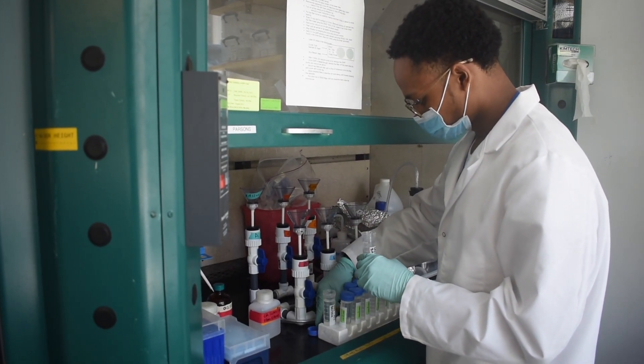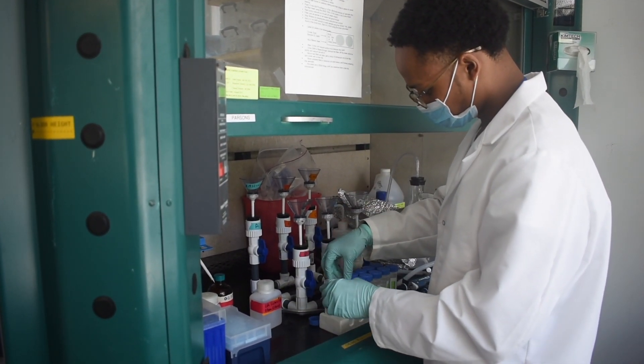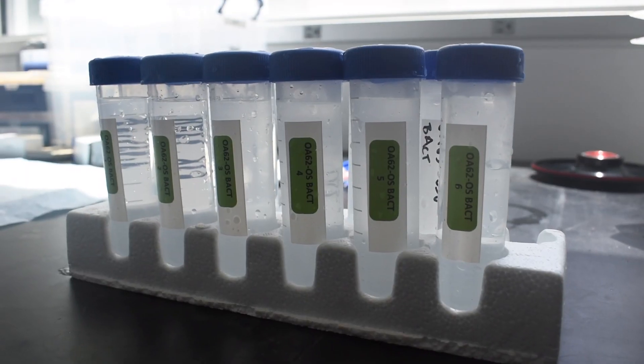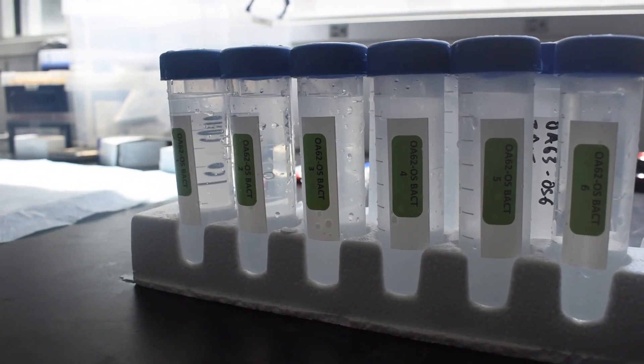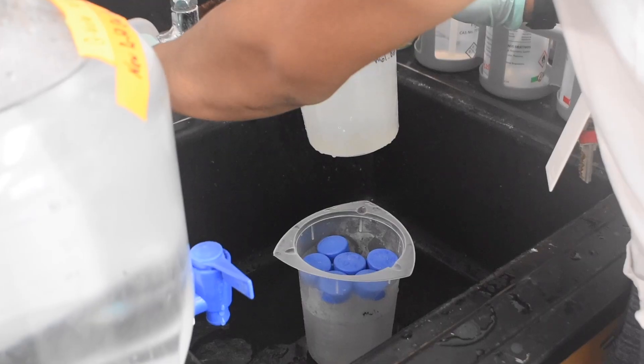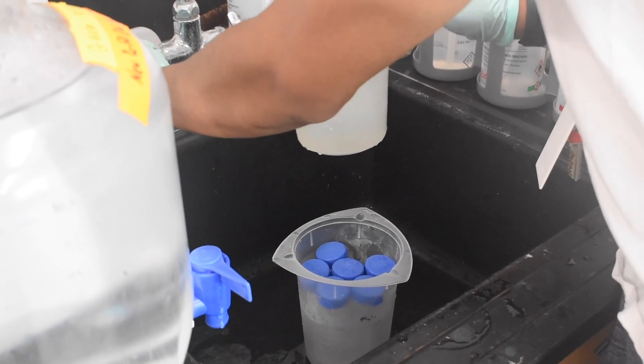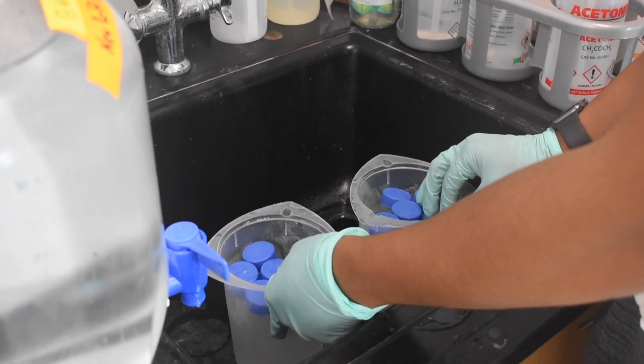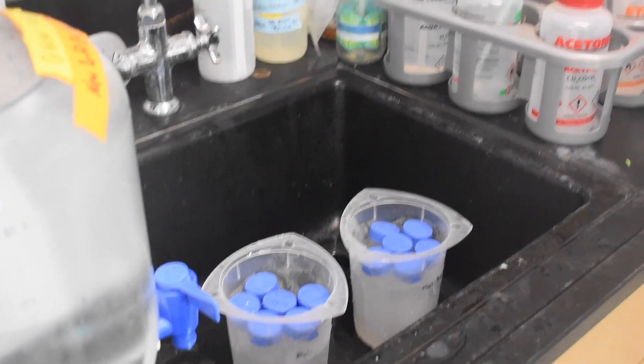So we start with samples and our samples are fixed with formalin, 10% formalin, for a couple of different analyses but for the actual bacteria enumeration we will filter the samples. They're stored at minus 80 so we need to thaw them and do a quick thaw so we do it in warm water.